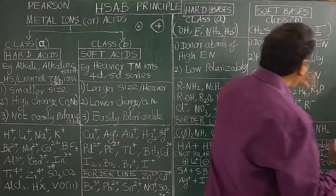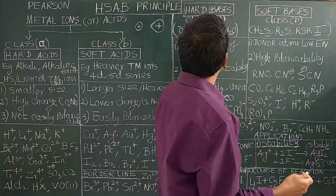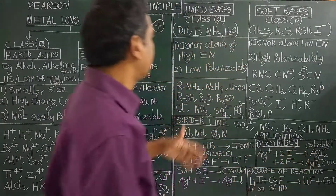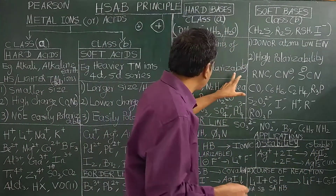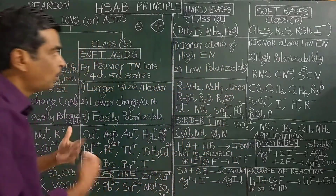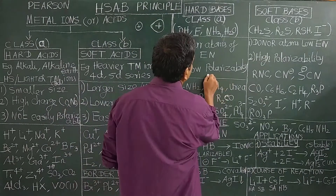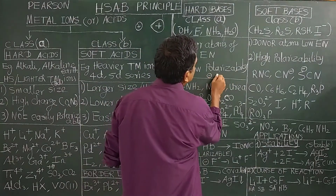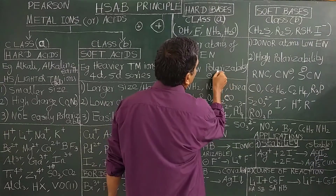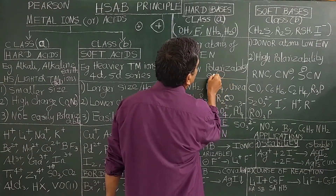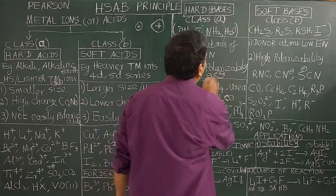Soft bases have donor atoms of lower electronegativity — for example, sulfur is less electronegative than oxygen. Hard bases like F− have low polarisability, whereas soft bases like I− are highly polarisable.